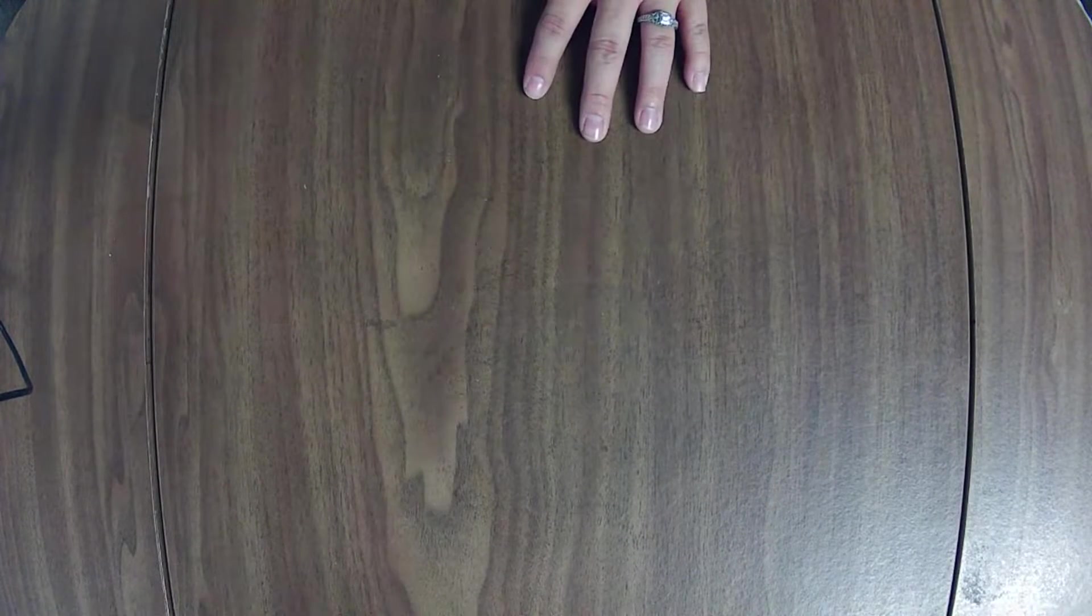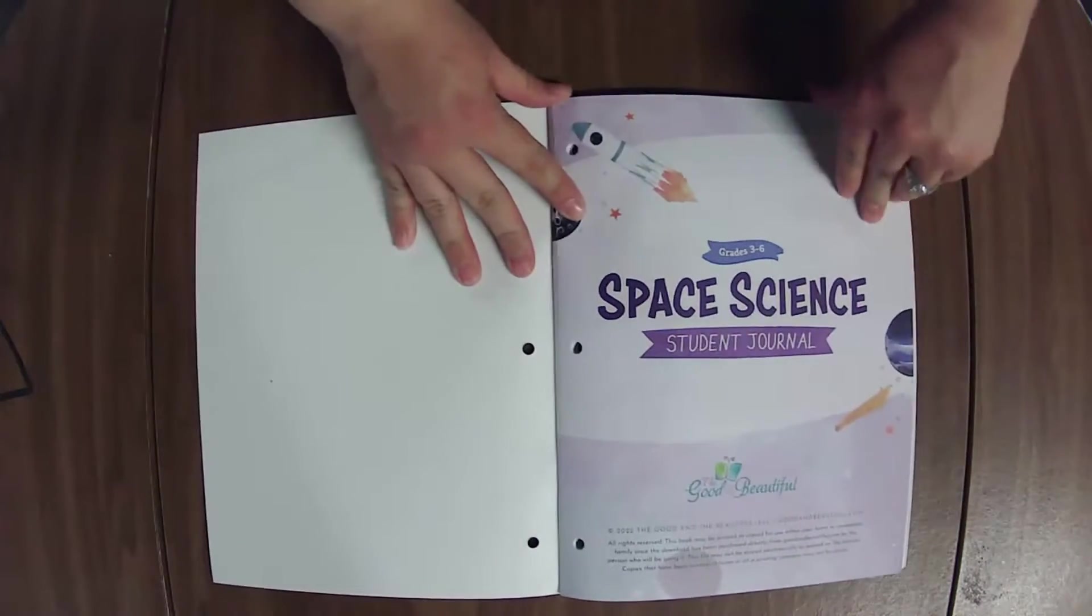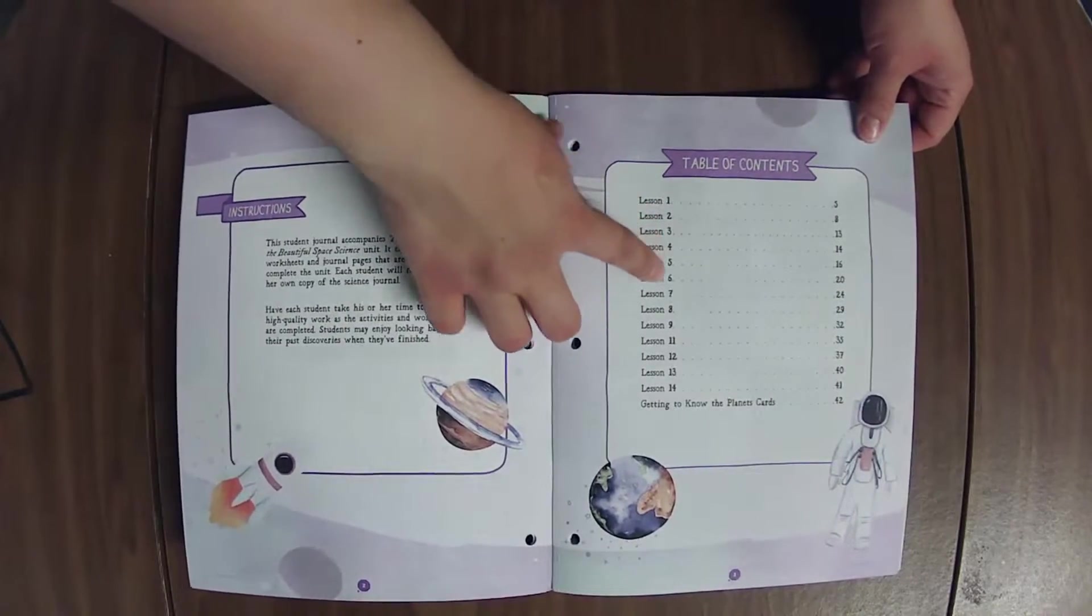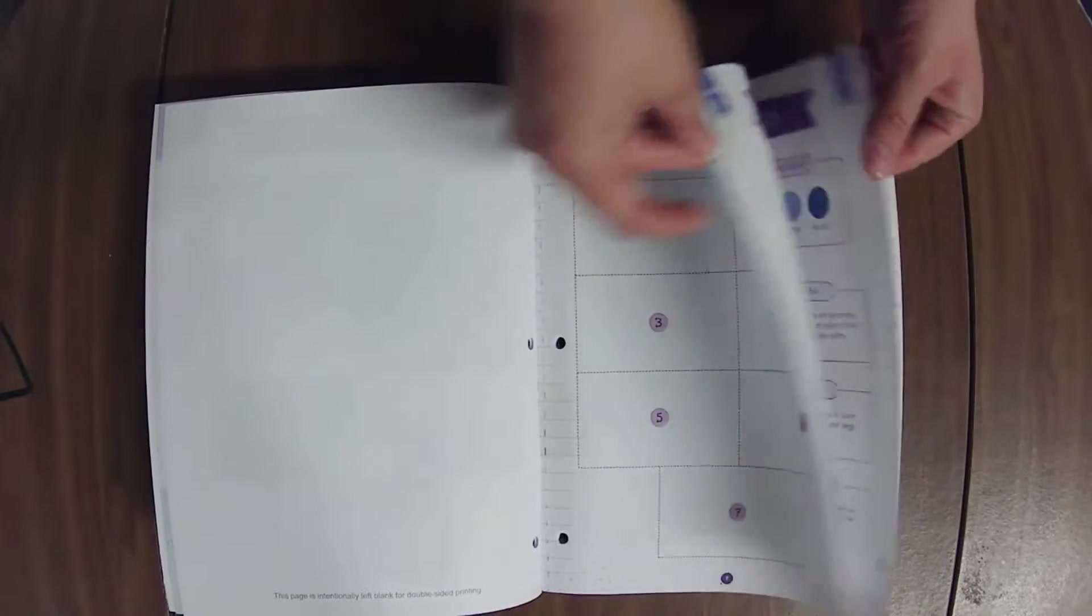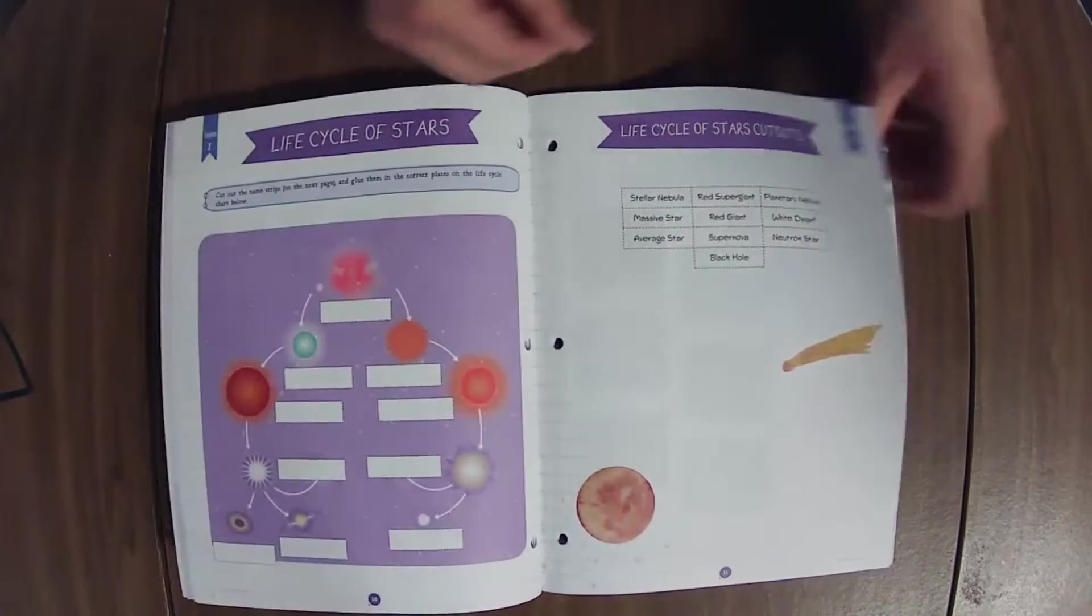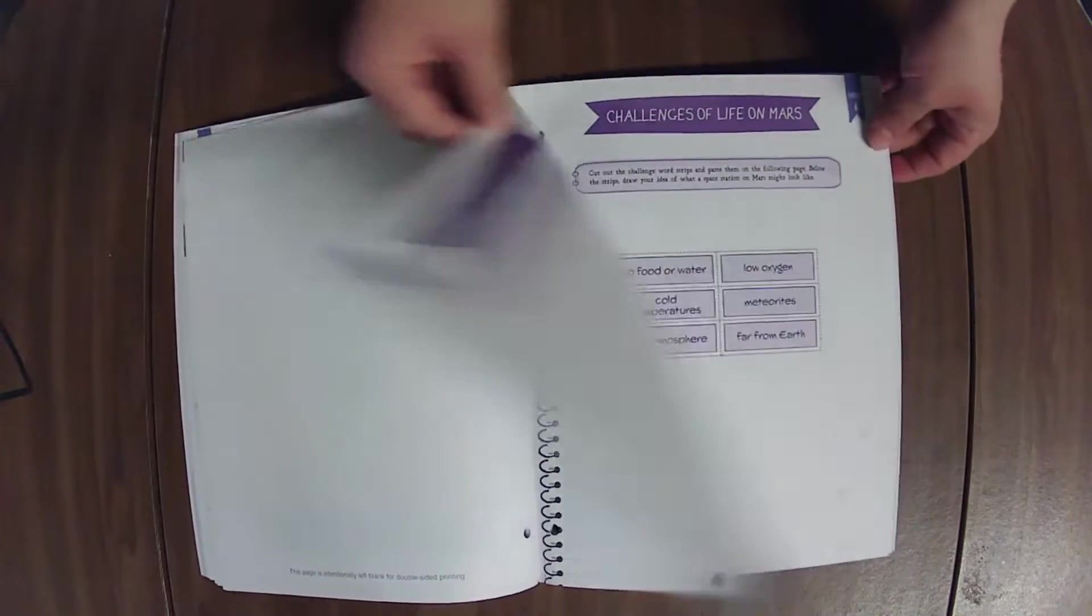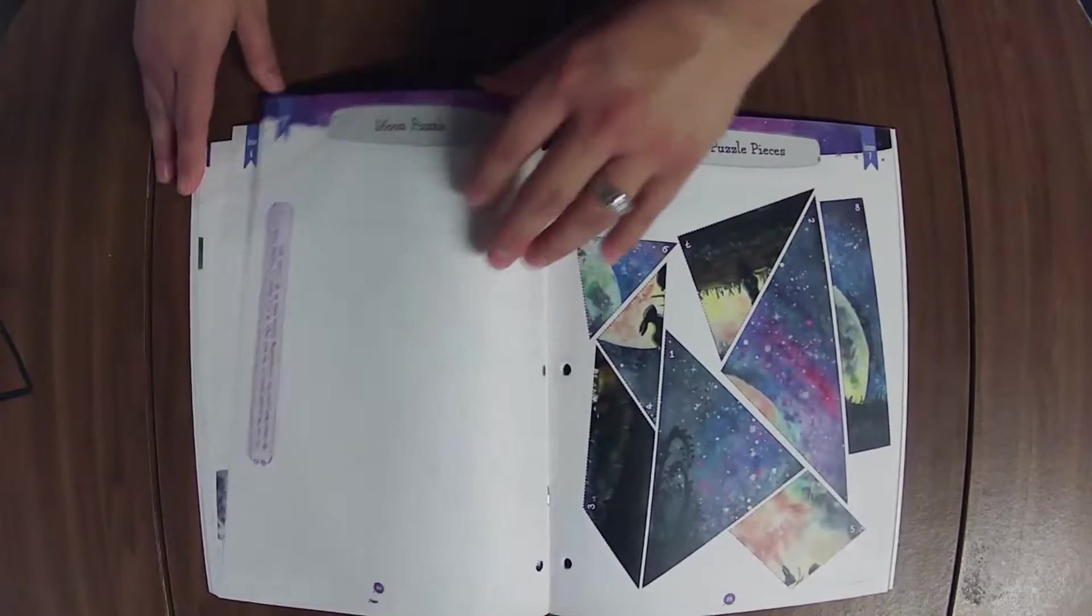All right, let's check out the journals. Grades three through six. This is the younger student one. You got one for not quite every lesson, except for 15. And you have here, they're going to cut these out, paste them in here.